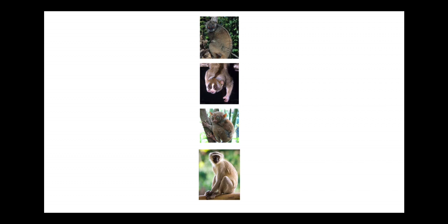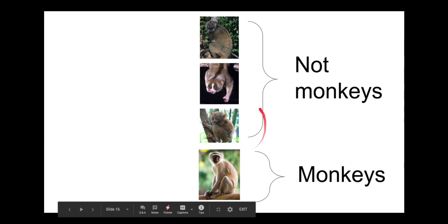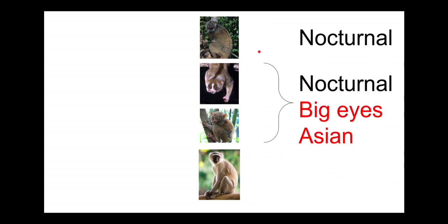In this video we'll be considering four different primate groups: lemurs, tarsiers, lorises, and monkeys. Roughly, looking at anatomy, we can divide these into monkeys and not-monkeys. Traditionally we have grouped tarsiers and lorises together because they're nocturnal, they're Asian, and they have relatively large eyes.